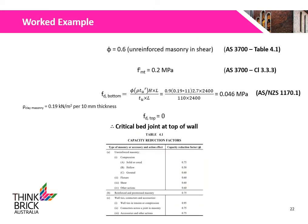The capacity reduction factor phi is 0.6 for unreinforced masonry, obtained from Table 4.1 of AS3700. The characteristic tensile strength of the masonry, F-MT, is 0.2 MPa, obtained from Clause 3.3.3 of AS3700. The compressive stress at the bed joint FD at the bottom of the wall is calculated to be 0.046 MPa. FD at the top of the wall is 0, as there are no superimposed loads acting at the top. Therefore, the critical bed joint is at the top of the wall.